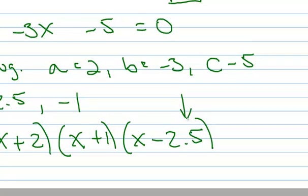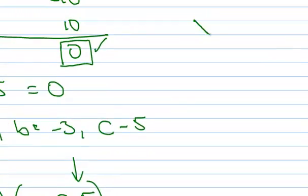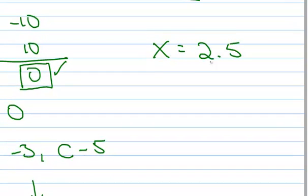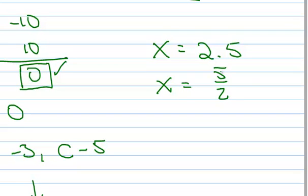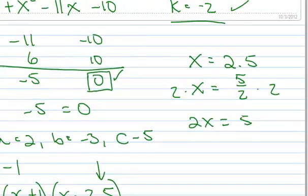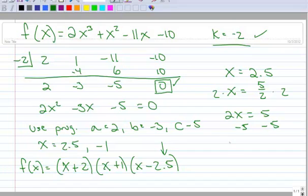Let me show you what to do with that decimal. Take x equals 2.5 to the side — do this for any that you get a fraction or decimal for. Change it into a fraction: 2 and a half is 5 over 2. Multiply both sides by 2, then subtract 5 from each side, and you get 2x minus 5.